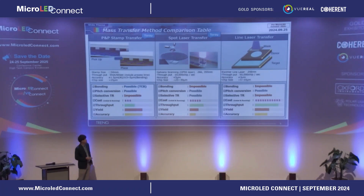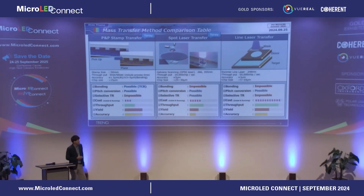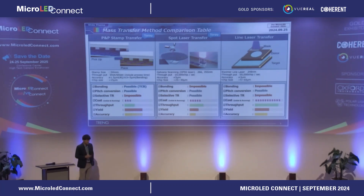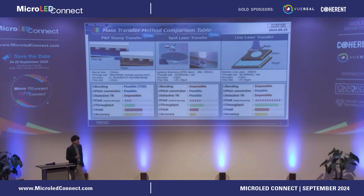For this application, the major players are using mainly three mass transfer methods. The first is the pick-and-place method, the second is the small laser transfer method mainly for the repair process, and the last one is the line laser transfer. They all have their advantages and disadvantages at the same time, so which is the best — we are not sure today.